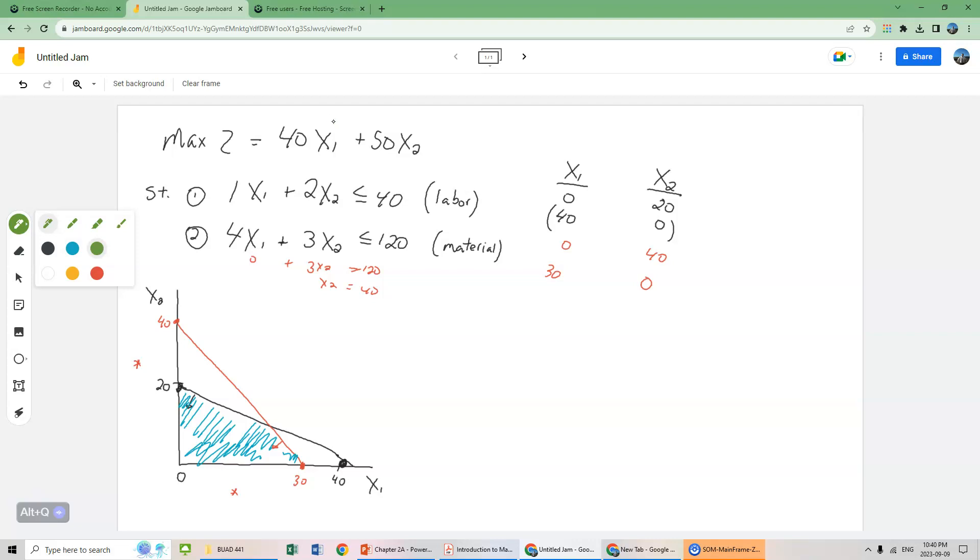Why have we colored in this section here? Well this section is known as the feasible region based on the constraints. The constraints are less than the black line or less than the red line. So the blue section is less than both of them.